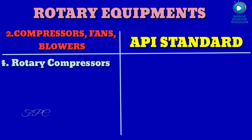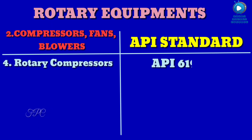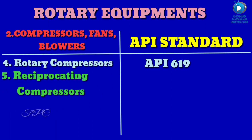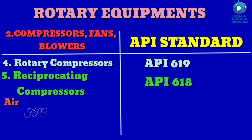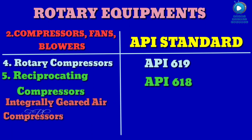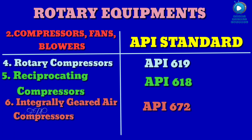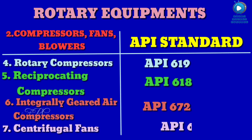Number four, rotary compressors, API 619. Number five, reciprocating compressors, API 618. Number six, integrally geared air compressors, API 672. Number seven, centrifugal fans, API 673.